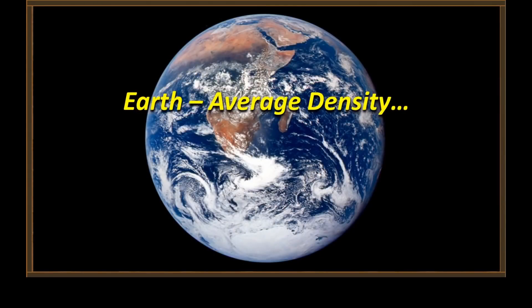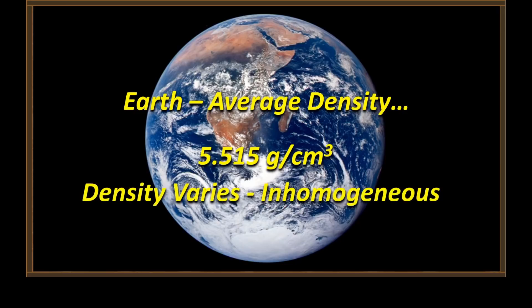Before we listen to Anthony, let's go over one real simple concept: density. Density is mass per unit volume. Earth has an average density of 5.515 grams per cubic centimeter. Earth has a density that varies though — it's what we call inhomogeneous, Anthony. That means we've got stuff like water that has a density of 1 gram per cubic centimeter, and then we've got other stuff like lead, uranium, and gold that have densities much greater than 10 grams per cubic centimeter.